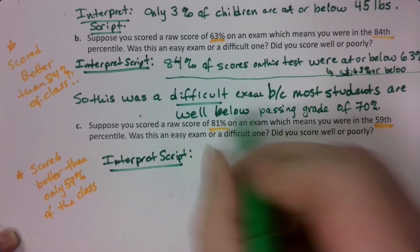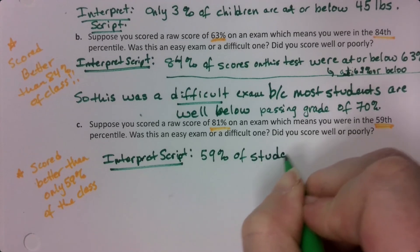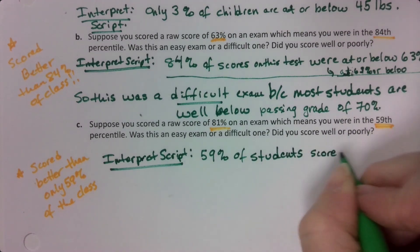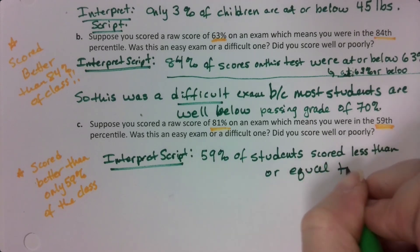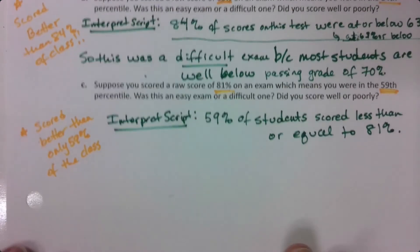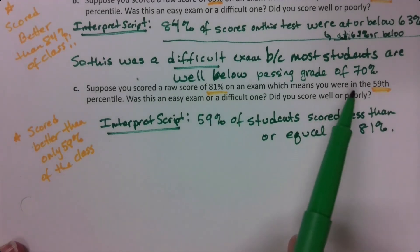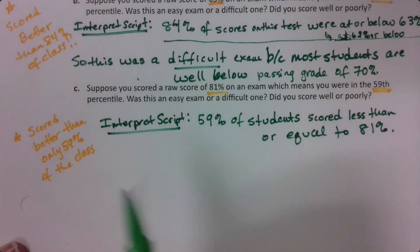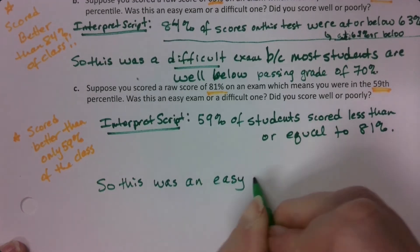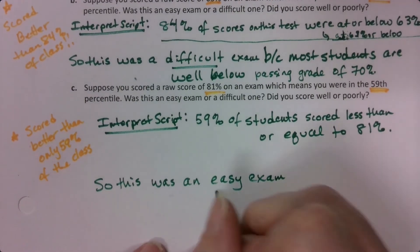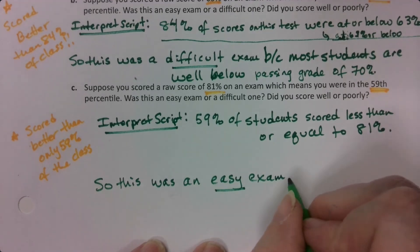Script. So 59% of students scored less than or equal to 81%. So was this an easy exam or a difficult one? The answer is that obviously was easy. Tons of students are scoring higher than 81%. So this was an easy exam. If you think about it, 41% of students are scoring higher than 81. That's another way to interpret this, by the way.